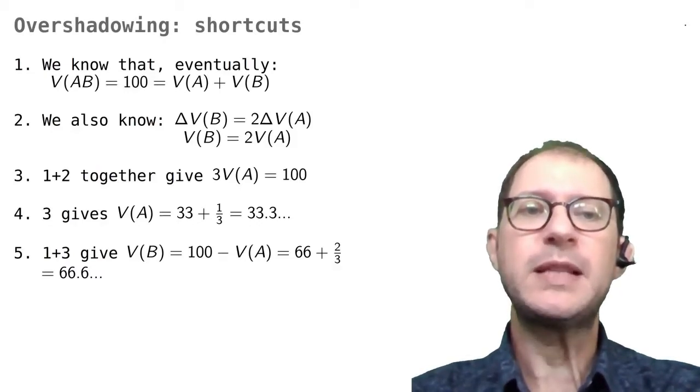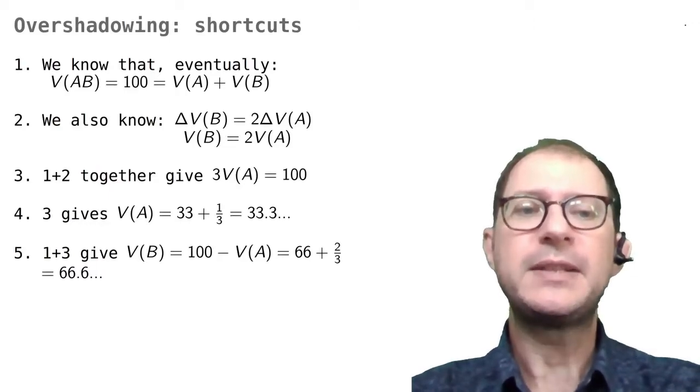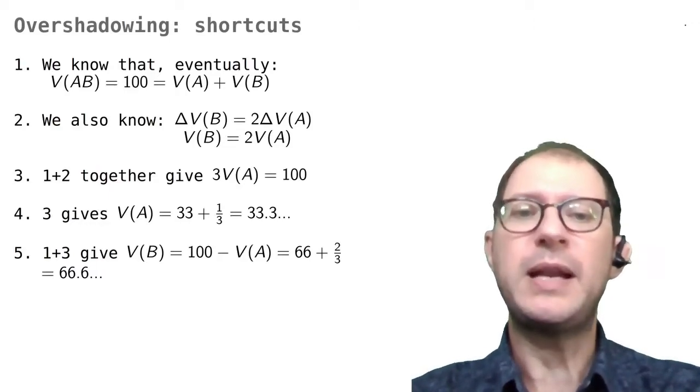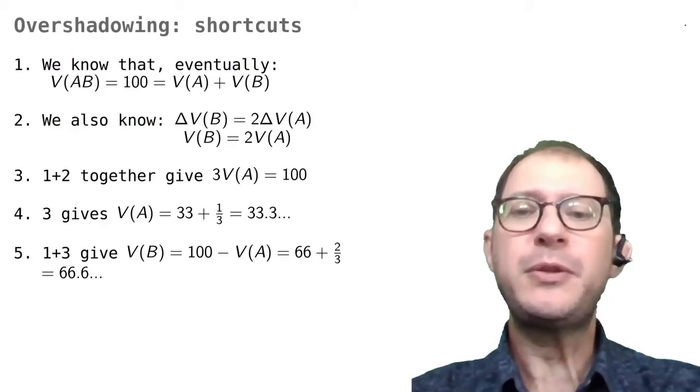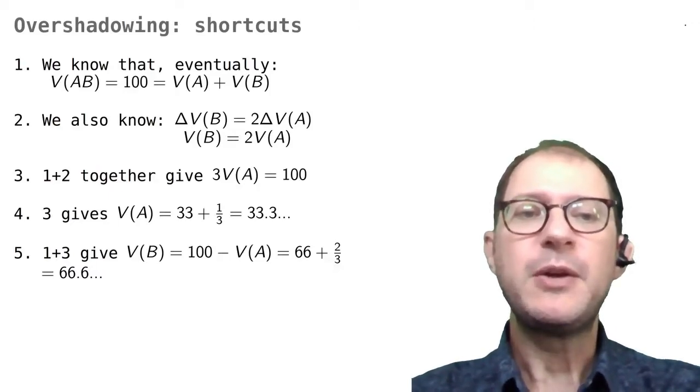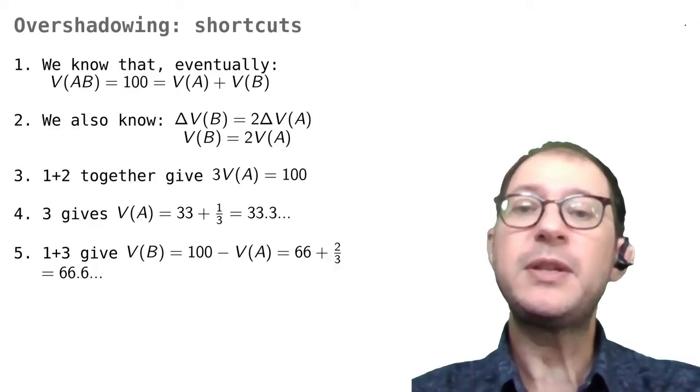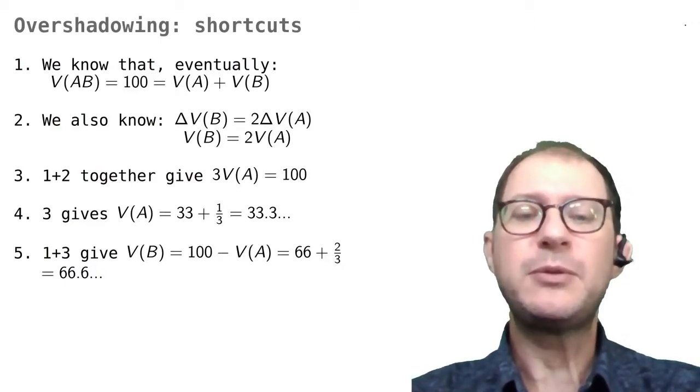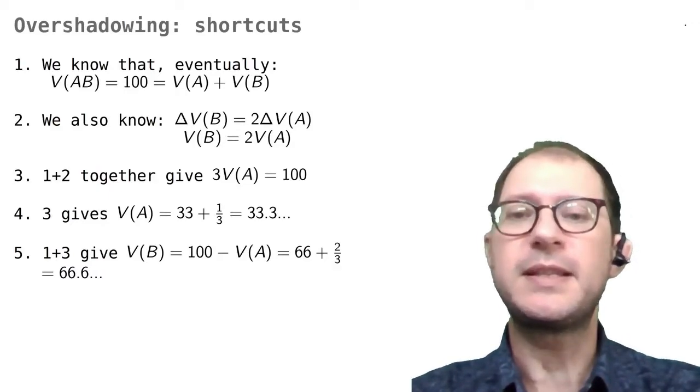As I observed in the previous slide, this means that in the end, V(B) will be twice V(A). By putting together these two facts, we realize that 3 times V(A) will be 100, meaning that V(A) in turn will be 33 plus one third, or if you prefer 33.33333 and so on. At this point, we can also calculate V(B), because we know that it's 100 minus V(A). This turns out to be 66 and two thirds, or 66.666 and so on.